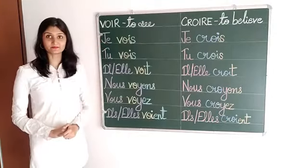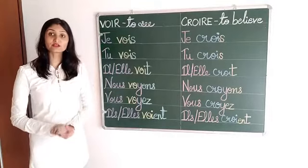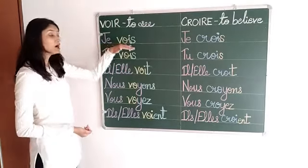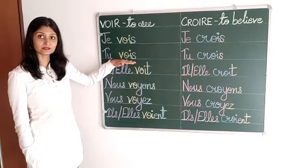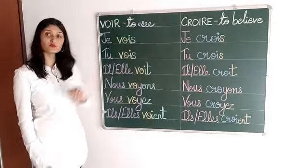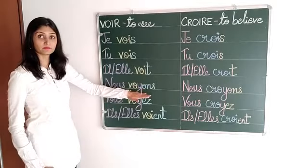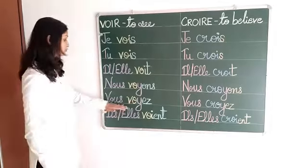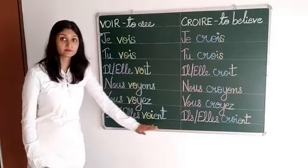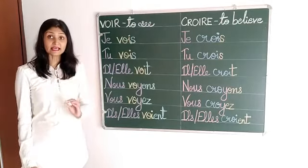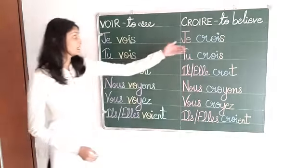Now what about the pronunciation? O-I is pronounced as 'wa.' So we are going to pronounce it as 'vwa.' Je vois — I see or I am seeing. Tu vois — you see. Nous voyons — we see. Vous voyez — you see, for plural. Il voit for masculine and Elle voit for feminine — they see.